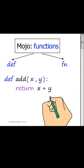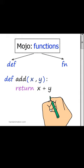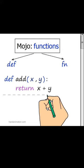As we can see, we have written a simple function that returns the sum of two numbers. Now let's write the addition function using another directive, fn.